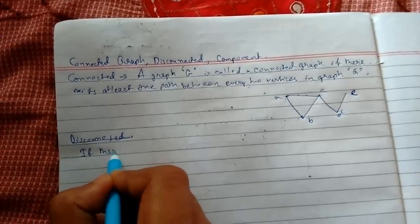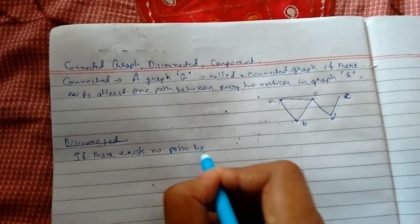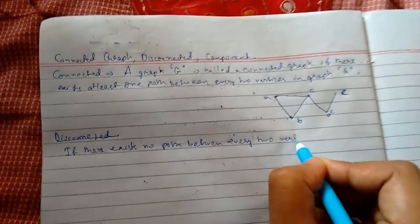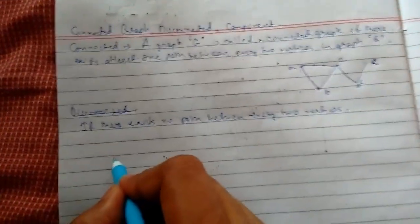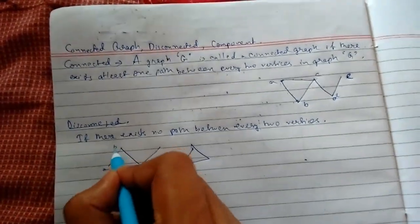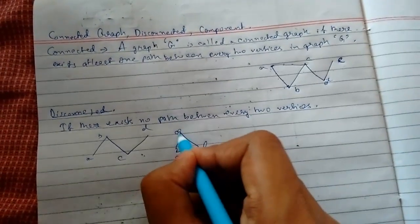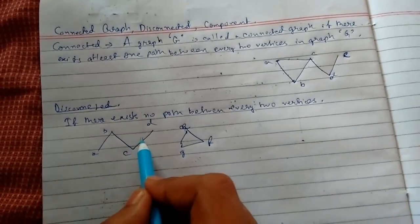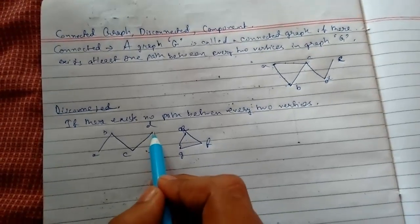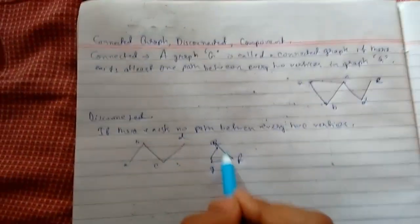Now for disconnected graph: if there exists no path between every two vertices, it is disconnected. Suppose we take the same example with vertices A, B, C, D, E, F, G. We see that some parts are connected graphs individually, but as a whole it is not connected because vertices D and E are not connected to the rest.